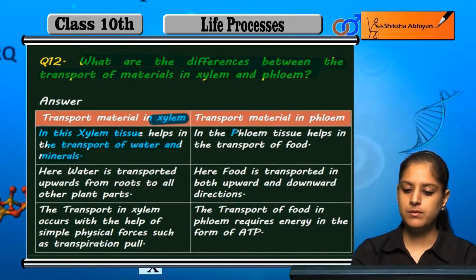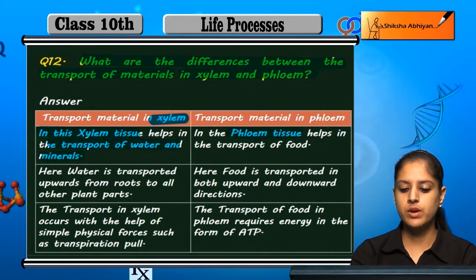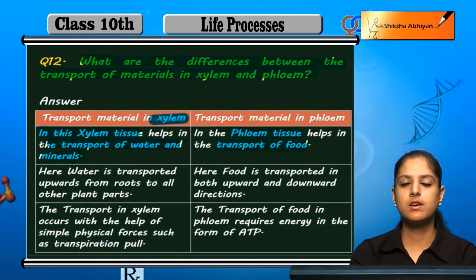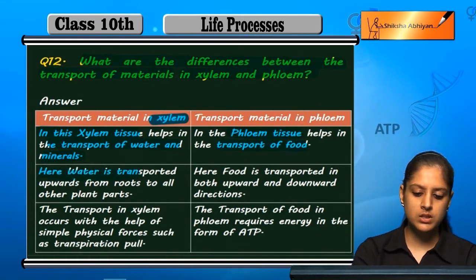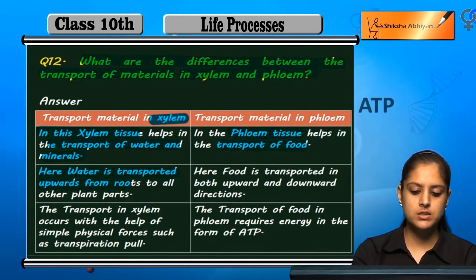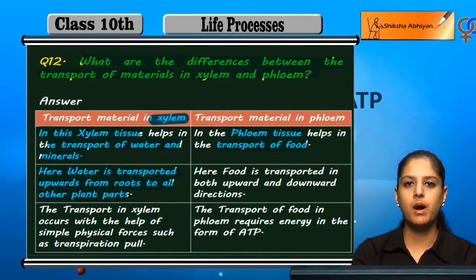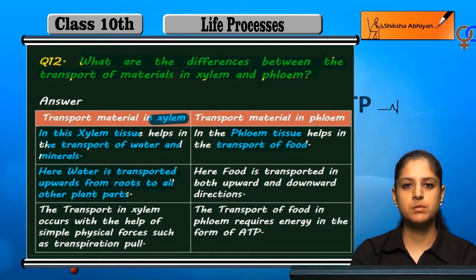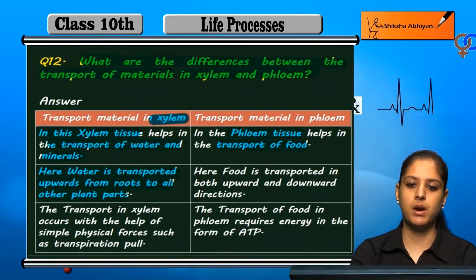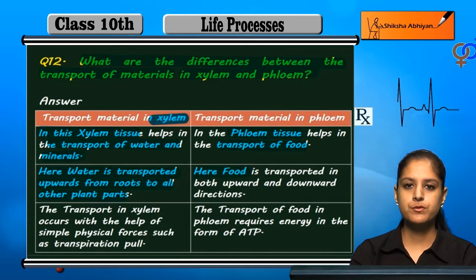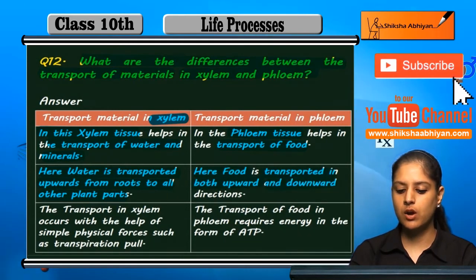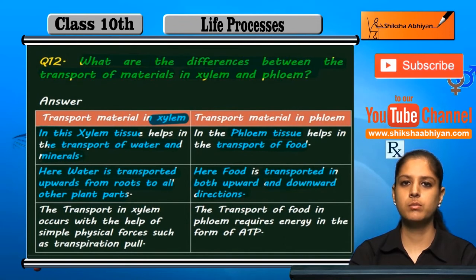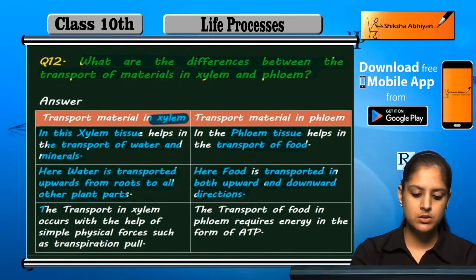Phloem tissue is responsible for food transport. In xylem, water is transported upwards from roots to all other plant parts. Food is transported in both upward and downward directions via phloem.